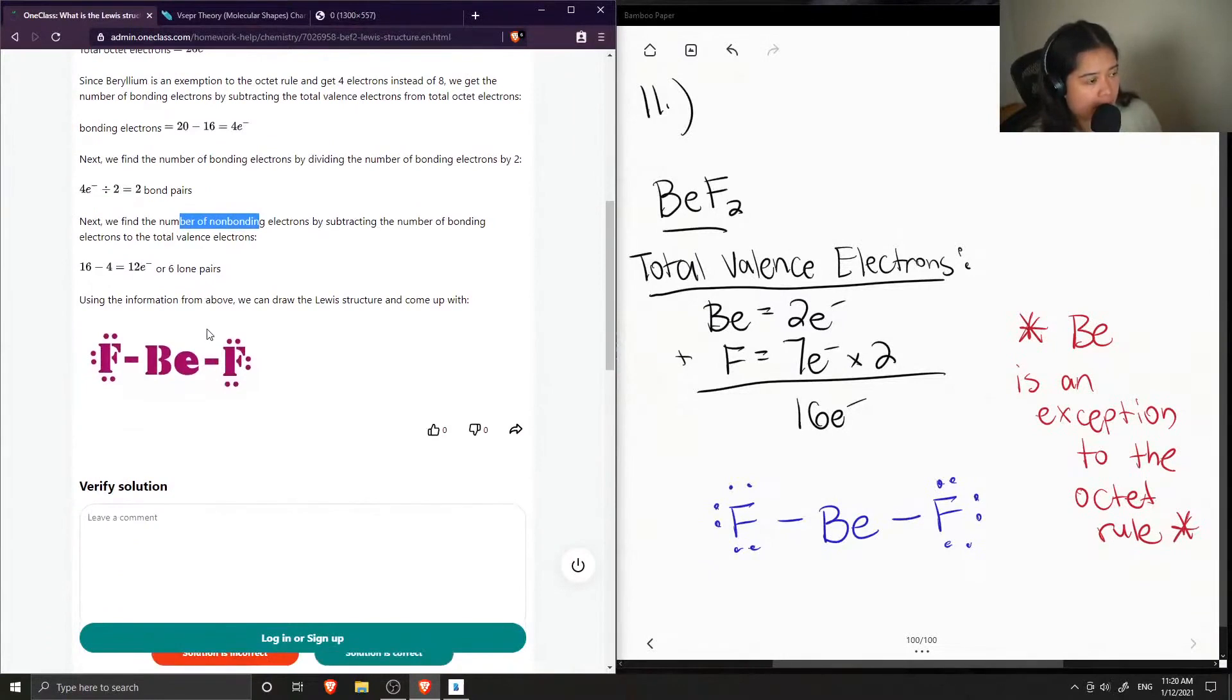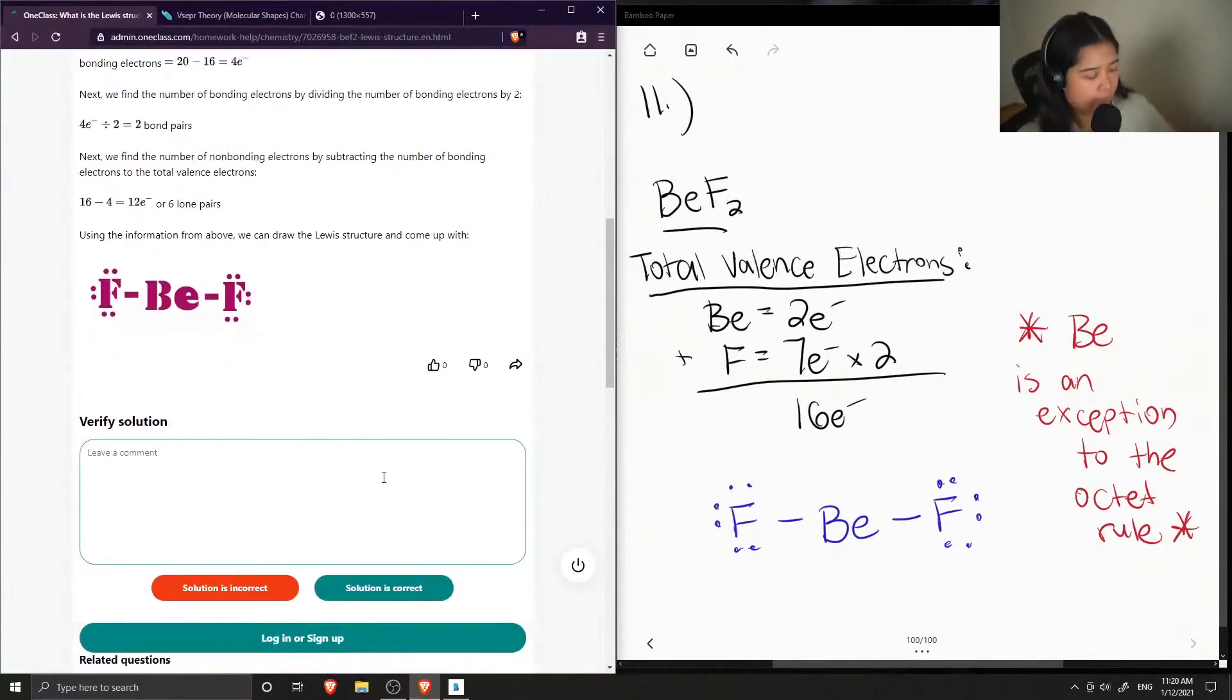Using the information from above, we can draw the Lewis structure. Okay, so this solution is correct.